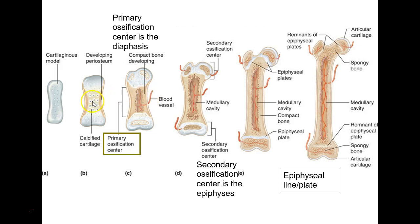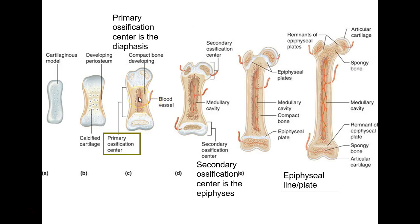Right where that swelling starts happening, bone is going to develop. How do the cells get there to make bone? They're brought in from the outside from blood vessels. For our purposes, let's just say it brings in osteoblasts — technically it's probably bringing in a precursor to that.